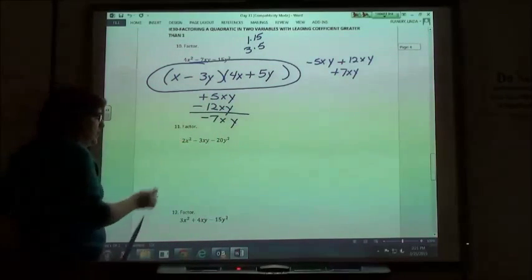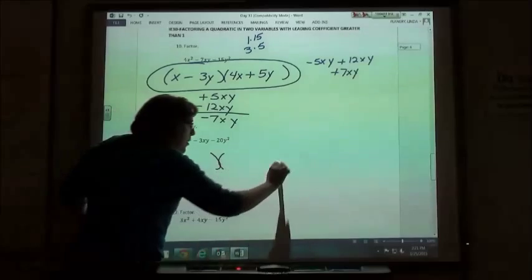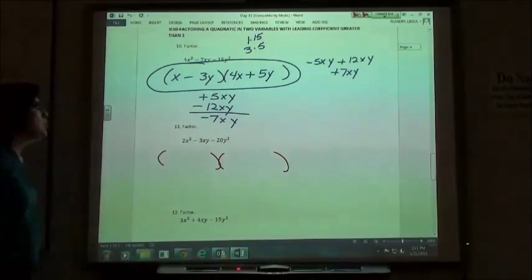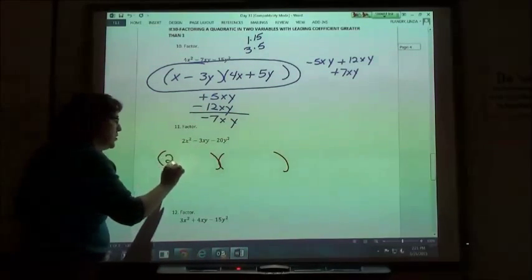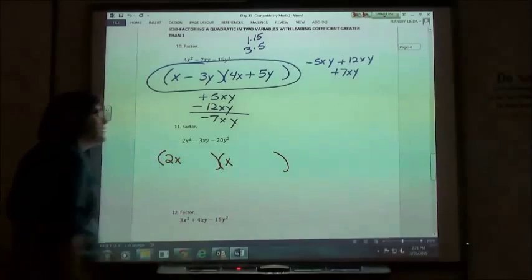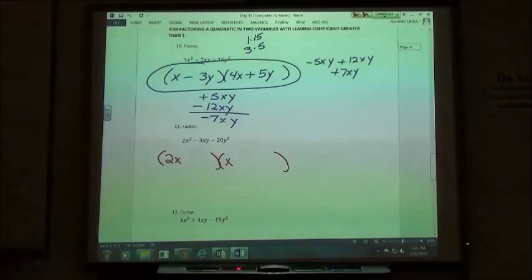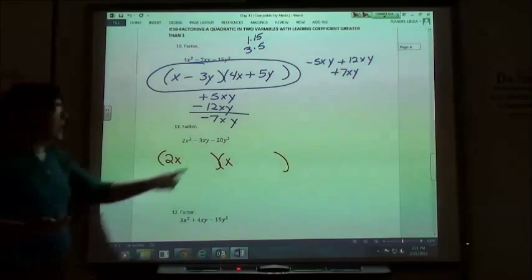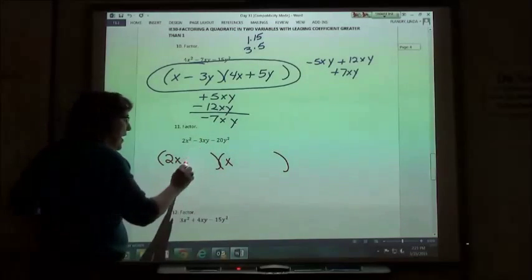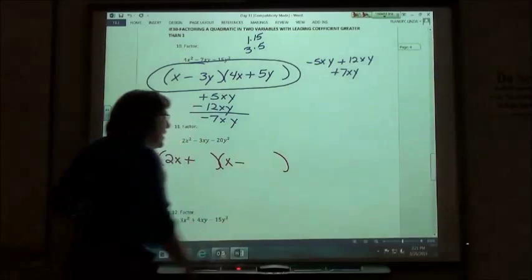Number 11, again we're factoring. This time we have variables on both of our numbers, so factoring 2x squared. 2x times x is 2x squared, the n sign again is negative, so we're going to have one positive and one negative.